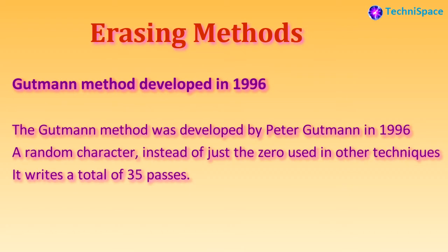The Gutmann method is an algorithm for securely erasing the contents of computer hard disk drives. A 35-pass overwrite technique using random characters is used. It was developed by Peter Gutmann in 1996. Hard drives of that era used different encoding methods than those used today, so most of the passes the Gutmann method performs are completely useless for modern hard drives. For any modern hard drive, a few passes of random scrubbing is the best approach.